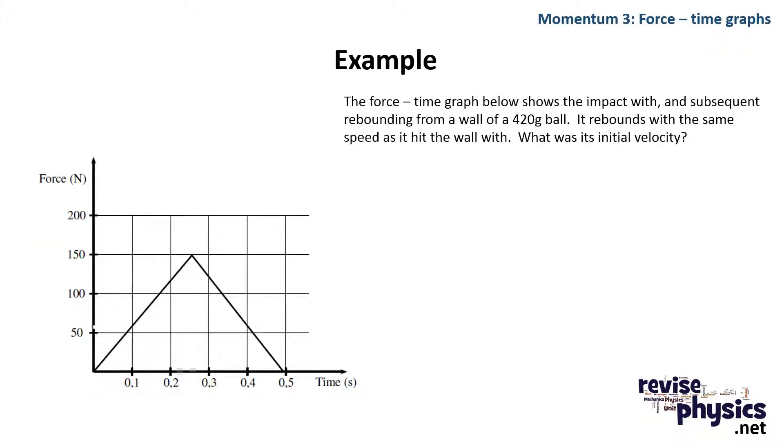So here's a quick example, a force time graph for a rebounding 420g ball. The question wants us to find out what its initial velocity was. Well, the first thing we need to do is find out what the area underneath this graph is. And we could count squares, or we could just say, well, if we draw this rectangle here, the area underneath is going to be half the area of that rectangle, which is a half times 150 times 0.5 seconds. So the area underneath there is 37.5 kgm per second.